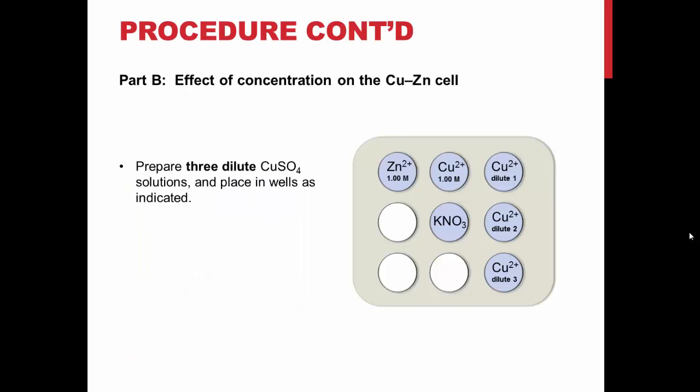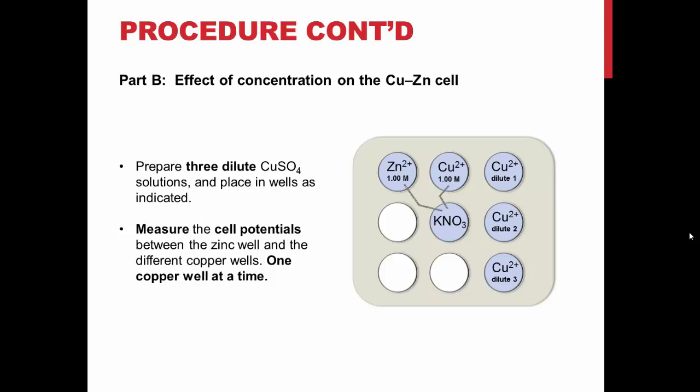You will also prepare three diluted copper solutions to measure the effect of concentration on the voltage. Arrange the wells as shown on the slide, or page 16-9 of your lab manual, and measure the different potentials between the zinc cell and the four different concentrations of copper.